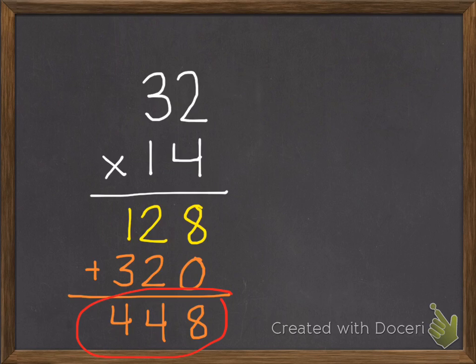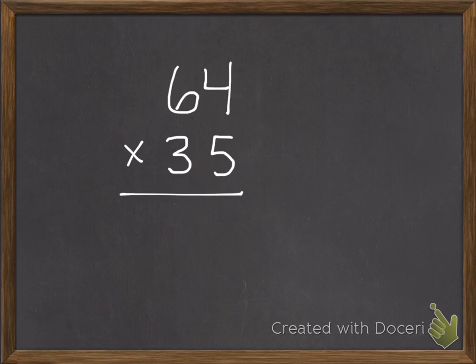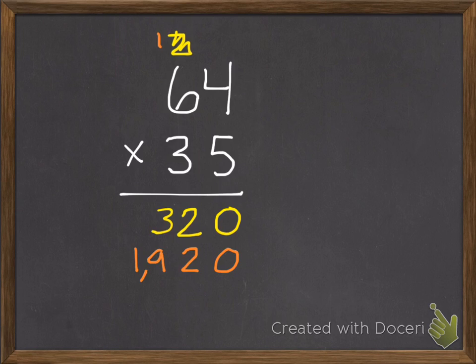Practice problem number 2: 64 times 35. Go ahead and pause. 5 times 4 is 20. 5 times 6 is 30 plus 2 is 32. Now we move on to our tens. Make sure we cross that one out and don't use it again. Put our 0 down. 3 times 4 is 12. 3 times 6 is 18 plus 1 is 19. And add those together, and we get 2,240.